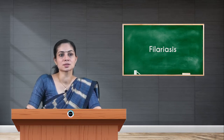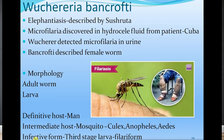Wuchereria bancrofti — as described by Sushrutha, it leads to elephantiasis. Wucherer detected microfilaria in the urine for the first time, and Bancroft described the female worm. Thus the name Wuchereria bancrofti.